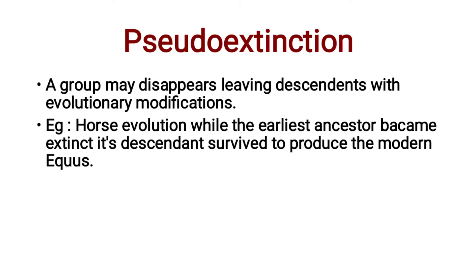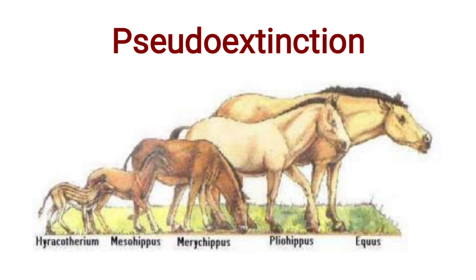Second, pseudo-extinction: a group may disappear, leaving descendants with evolutionary modifications. For example, horse evolution — while the earliest ancestor became extinct, its descendants survived to produce the modern equus. This is a picture of a pseudo-extinction in the horse family.